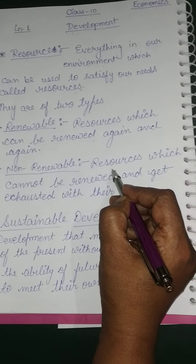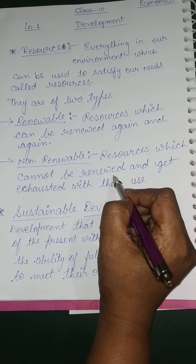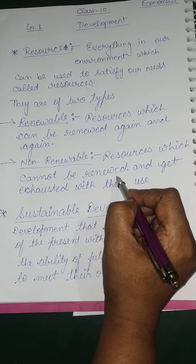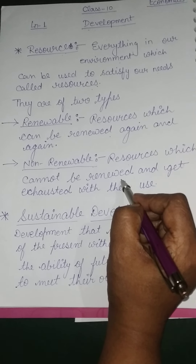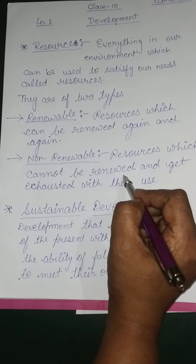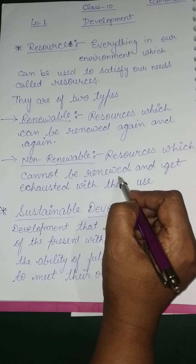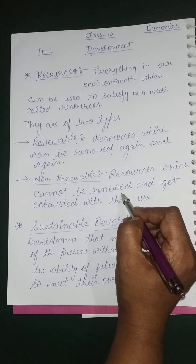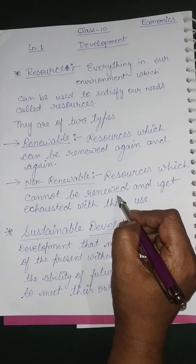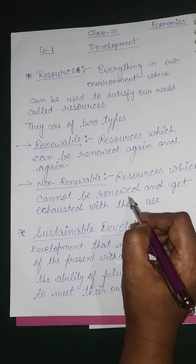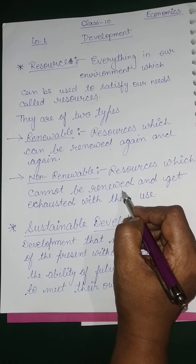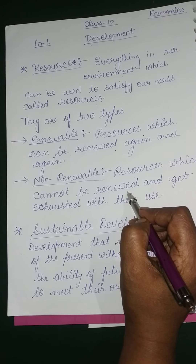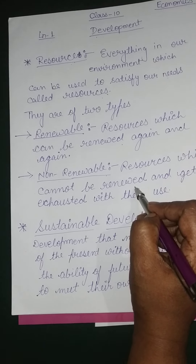The second type is non-renewable resource. Non-renewable resource means those resources which cannot be renewed — those resources which cannot be utilized again and again. If they exhaust from the environment, the quantity that has been exhausted will never come back to provide development opportunities to the people.